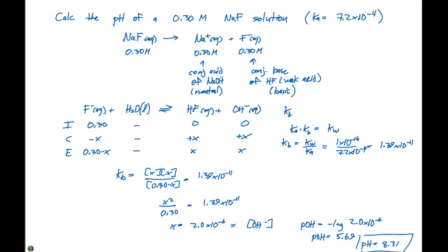Take the negative log of that to get the pOH. Go from the pOH to the pH by taking 14 minus the pOH. Our pH for this particular problem is 8.31. You'll have to use this approach when you're asked to figure out pH of salt solutions.